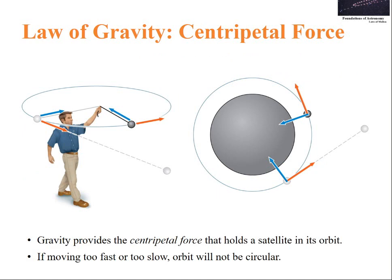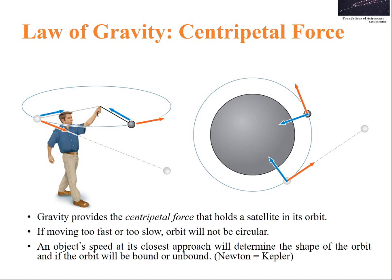Gravity provides the centripetal force that holds a satellite in its orbit. If moving too fast or too slow, orbits will not be circular. An object's speed at closest approach will determine the shape of the orbit and if the orbit will be bound or unbound.